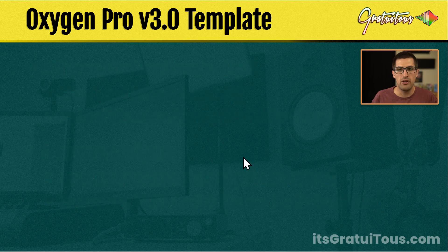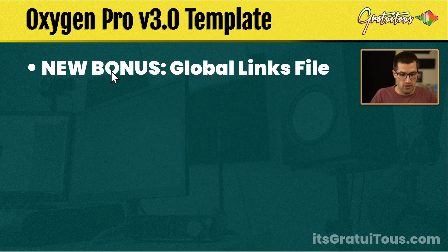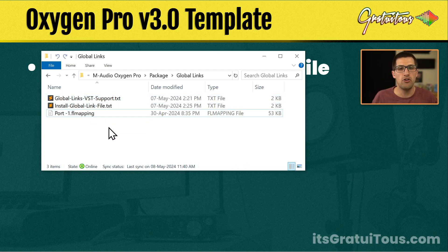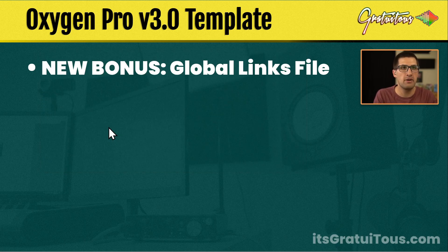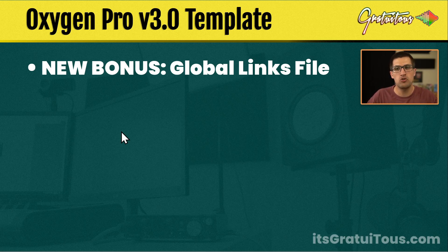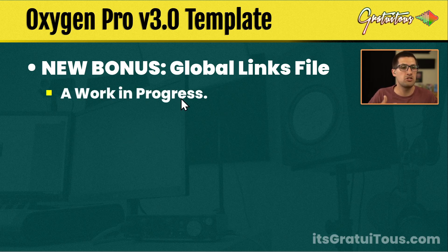The new bonus feature in version 3.0 is my global links. You actually get my global link file. If you've ever watched my trainings and seen how I get hands-on mixing with certain plugins, you simply install the global link file in FL Studio. This is honestly so valuable. I've spent so much time figuring out these plugins, fine tuning them, tweaking them — some are set up really complex, some very basic. And I don't own tons of plugins. This is a work in progress, which means I'm constantly updating and fine tuning it, and as I keep releasing new updates to the Oxygen Pro template, I'll keep that updated.